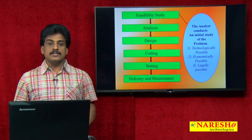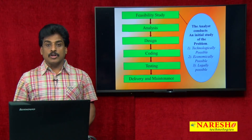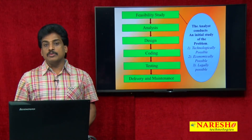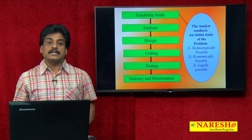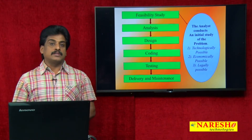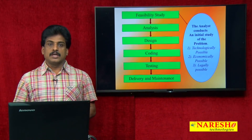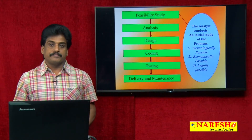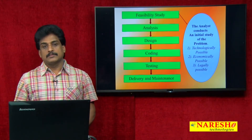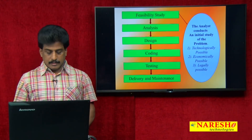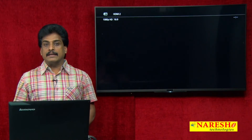IEEE means Institute of Electrical and Electronics Engineering — it is the world's number one organization for documentation of project environments. As per IEEE standards, the six phases are: feasibility study, analysis, designing, coding, testing, and delivery and maintenance.